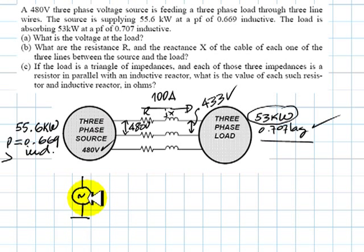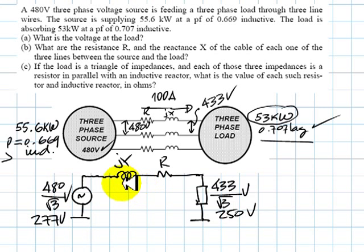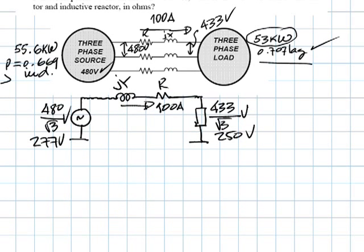Here's one of the phases of the Y-connected source. And now we have the reactance and the resistance of the cable and one of the Y-connected loads. Let me write in R, jX. And this source is actually 480 divided by root 3 volts, and this one is 433 volts divided by root 3 volts. By the way, this is 277 volts and this is 250 volts. The current is also known, that is 100 amps. And we know the power factor here, which is 0.707 lagging, and we know the power factor here, which is 0.669 lagging as well.